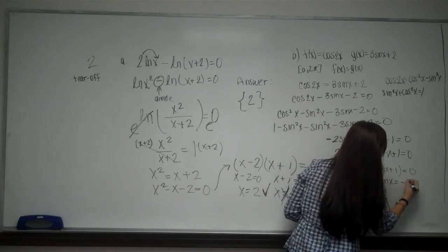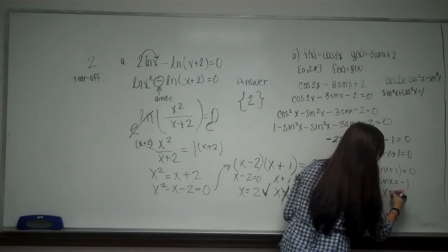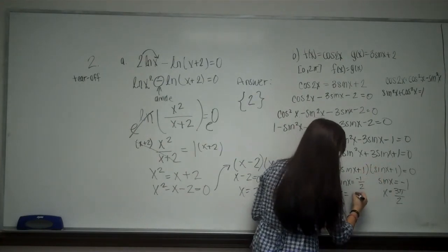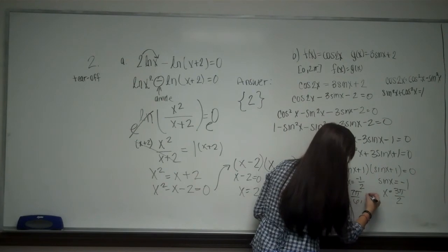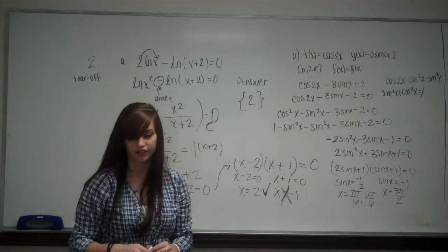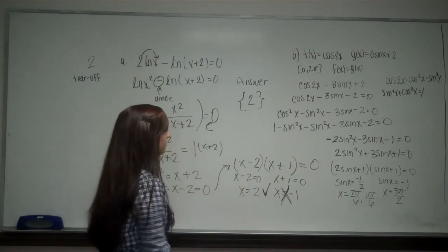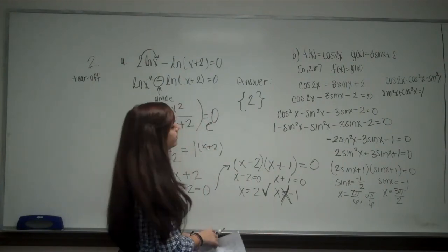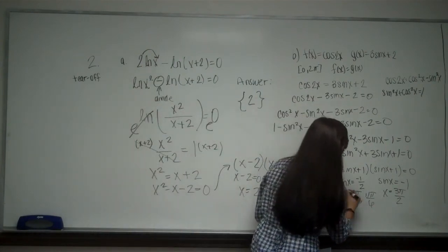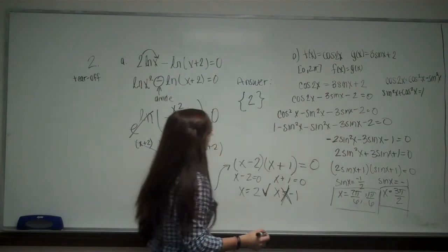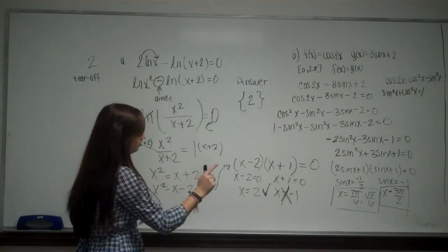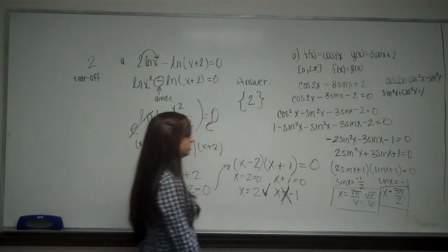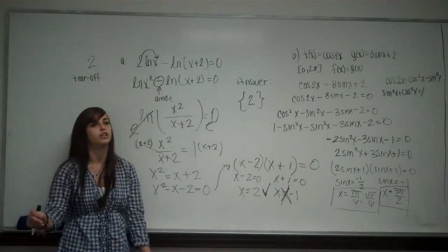We know that this happens when x is 3 pi over 2. And we know that this happens when x is 7 pi over 6 and 11 pi over 6. So from there, we are going to need to make a line interval and test where those answers are true at. Oh, I'm sorry. You can leave your answers in this form. You don't need to make an interval. So for this, your answer is going to be, for this one, you're going to say x equals 7 pi over 6, 11 pi over 6, and 3 pi over 2. And you can leave your answer in that form. You don't need to write them on an interval. So this is number 2 of the tear off.